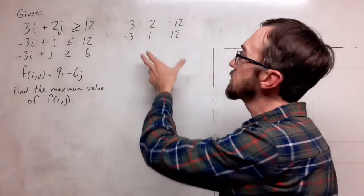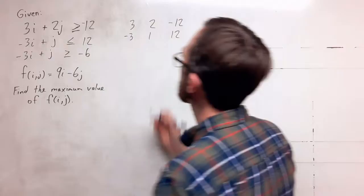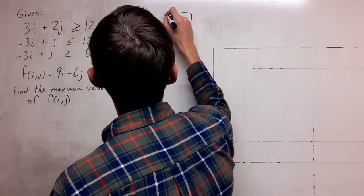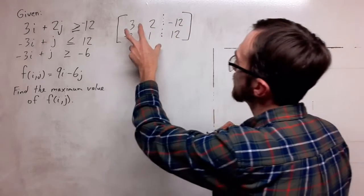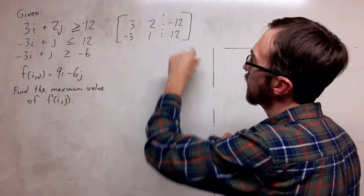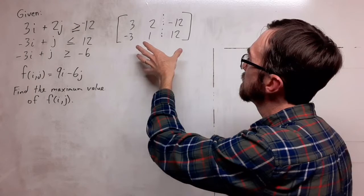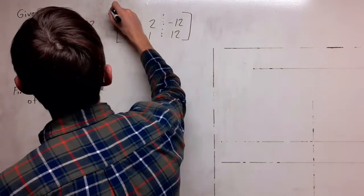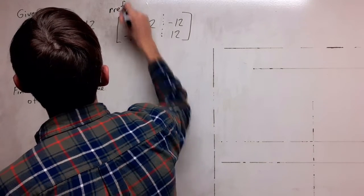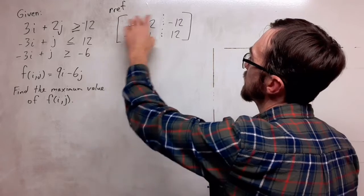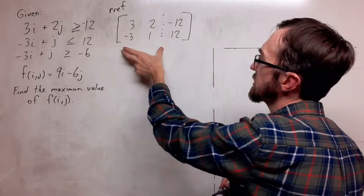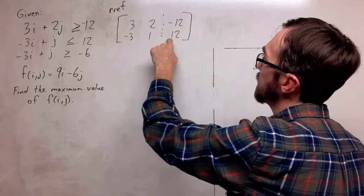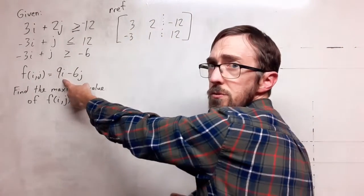So I will have a 2 by 3 augmented matrix, really a 2 by 2 connected to a 2 by 1. Now we're going to do RREF on this. Over here I should get 1, 0, 0, 1, which is the identity matrix, and a number in the top and bottom here to be plugged into this function.